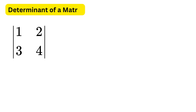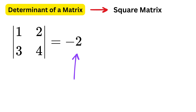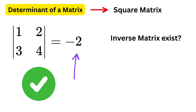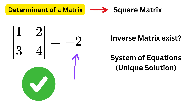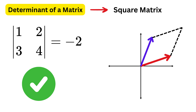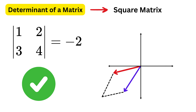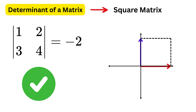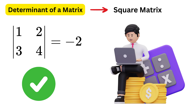First, let us learn about the determinant of a matrix. The determinant is a single number that we can calculate from a square matrix. This number tells us a lot about the matrix. It helps us check whether the matrix has an inverse, whether a system of equations has a unique solution, and it also tells us how the matrix affects space — whether it stretches, shrinks, flips, or does nothing at all. For now, let us see how to calculate the determinant of a matrix.